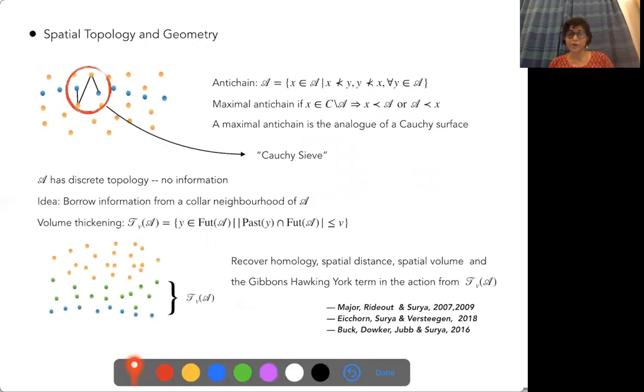We can also look at spatial topology and geometry. Although you can construct something that looks like a Cauchy hypersurface, a set of unrelated elements maximal in the sense that anything not in that set is to its future or past, this isn't a good enough Cauchy hypersurface. We call it a Cauchy sieve. It doesn't capture all the relations because of discreteness and non-locality. You can reconstruct information by borrowing from a collar neighborhood. We've recovered homology, spatial distance, spatial volume, and the Gibbons-Hawking-York term.